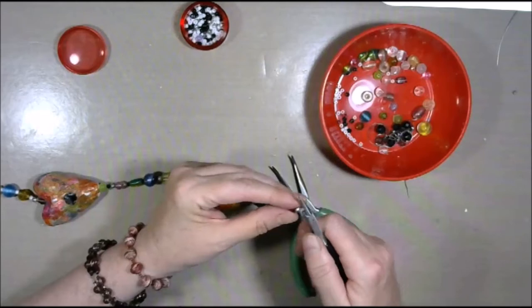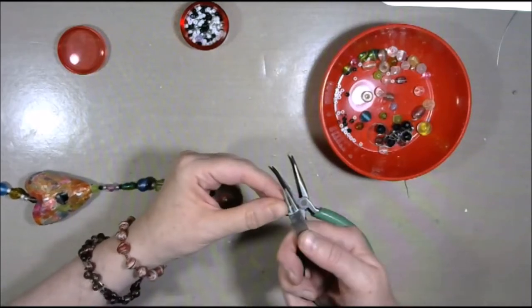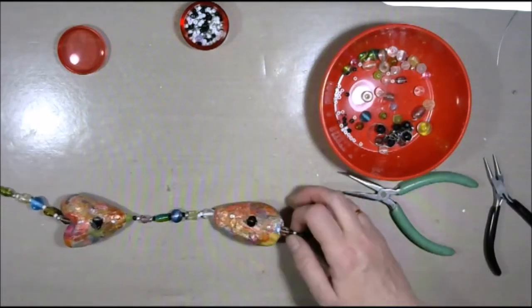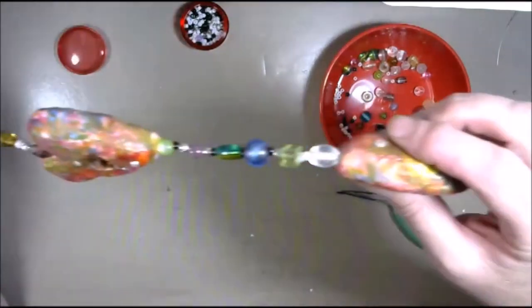So I'm adding another split ring to the other end, just like I did in the beginning. And this is the first view of it. And you can see those little beads.